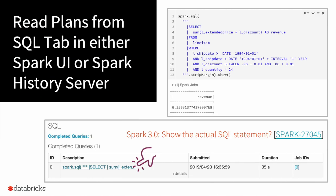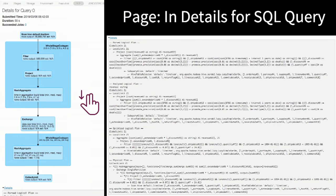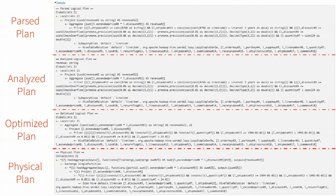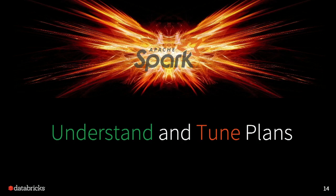After you click the query link, you enter the details of that SQL query. At the beginning you can see the visualized physical plan. Scrolling down, you see the text version, which includes the parsed plan, analyzed plan, optimized plan, and physical plan. In Spark 3.0, this will change to support adaptive query execution — you will see the plan change at runtime. The format is a little different, but most parts are the same. After getting the plan, the next step is to understand and tune your query plans.